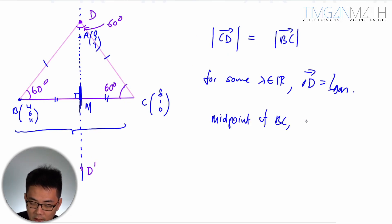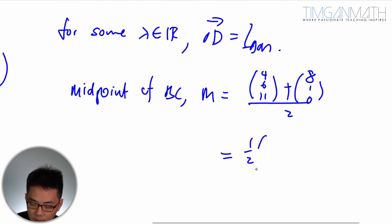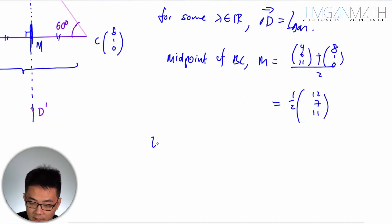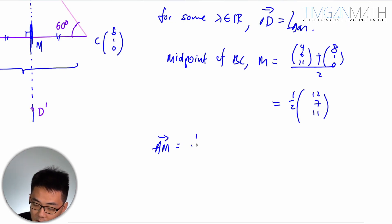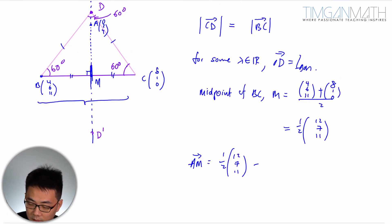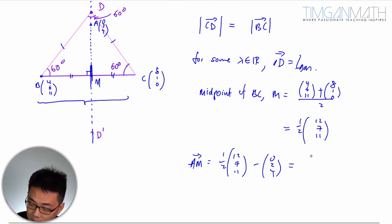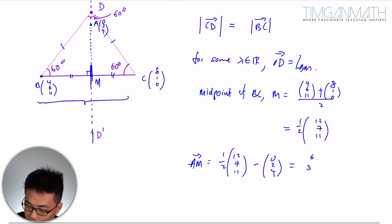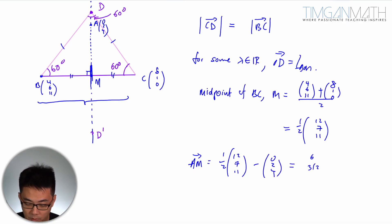I'm going to find the midpoint M of BC. M is actually (4+8, 6+1, 11+0) divided by 2, which gives (12/2, 7/2, 11/2). So M = (6, 7/2, 11/2). That is my midpoint. Then I can find line AM.